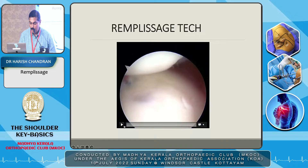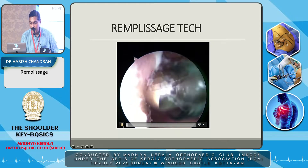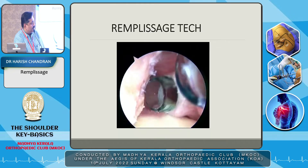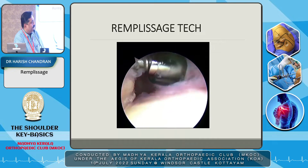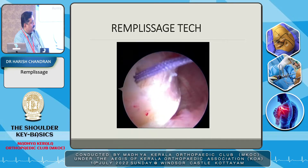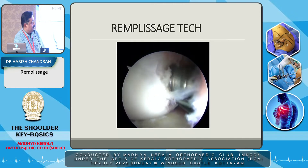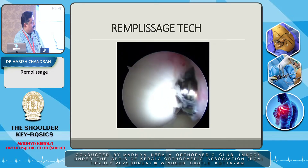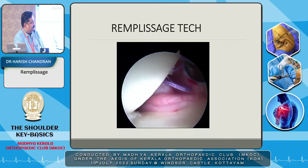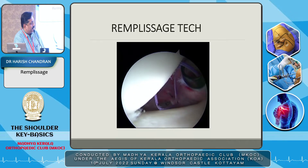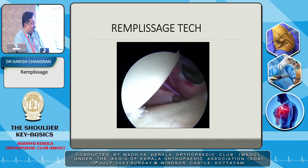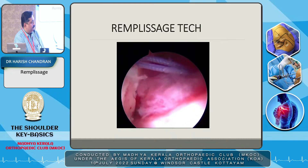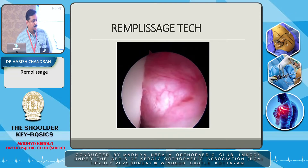Another technique uses single-loaded anchors with two portals — for a larger defect. The area is debrided, two small cannulas are used, and single-loaded anchors are placed on both sides. With the bird beak, single bites are taken on both sides and tied up to close the defect.